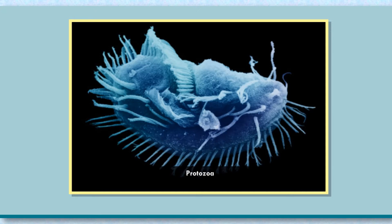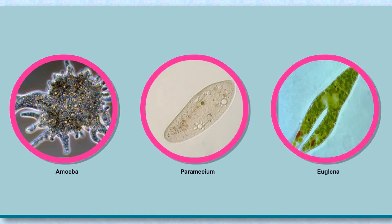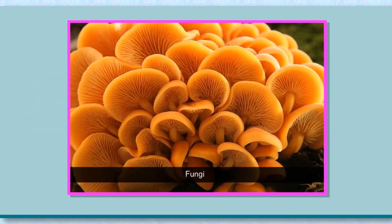Protozoa are single-celled organisms with animal-like characteristics. They move from one place to another and capture food. Amoeba, paramecium, and euglena are a few examples of protozoa.